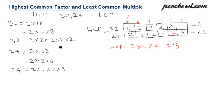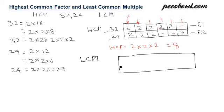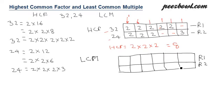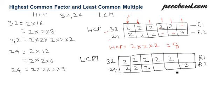Now let us find the LCM of these two numbers. For LCM we use the same table with two rows and six columns. In row one we write all the prime factors of 32 — five twos — and in row two we write all the prime factors of 24, which are two, two, two, and three.